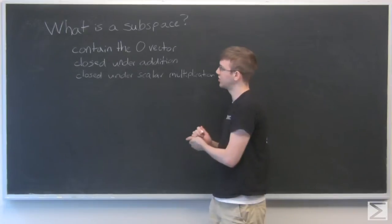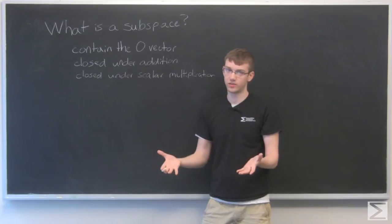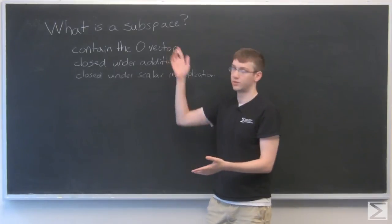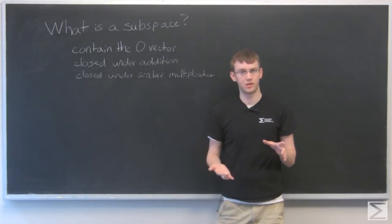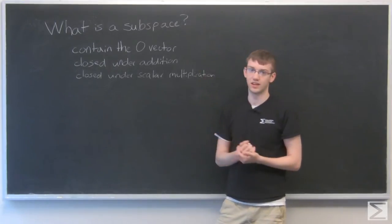Closed under addition means that we can take any vector from that subspace and add it with another vector from that subspace, and we'll get a third vector that is still within that subspace. Closed under scalar multiplication similarly means we can take that vector, multiply it by any constant, and we'll get a vector that is still within that subspace.